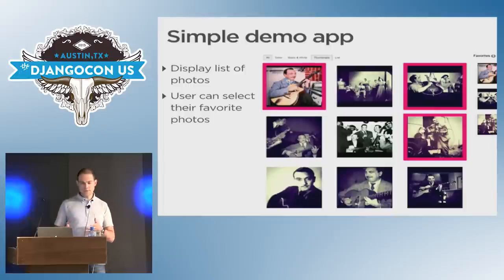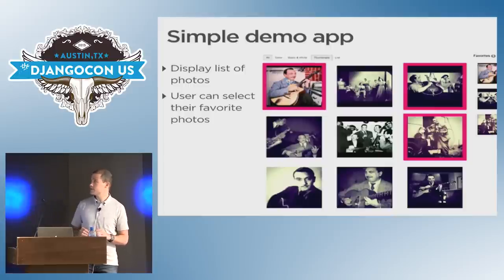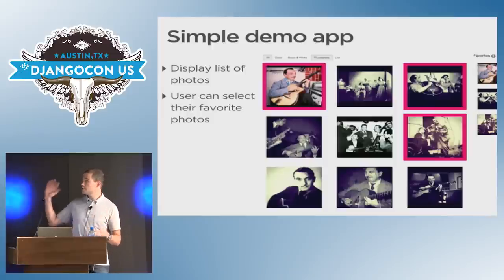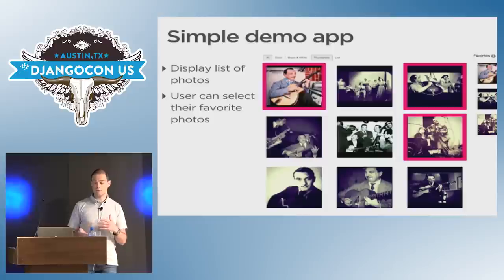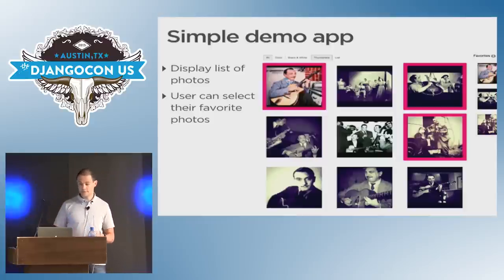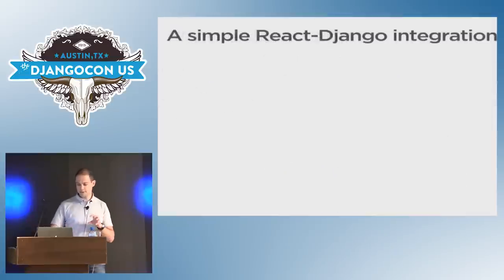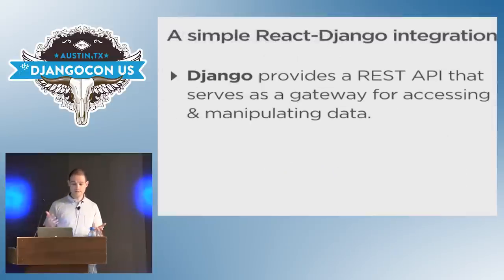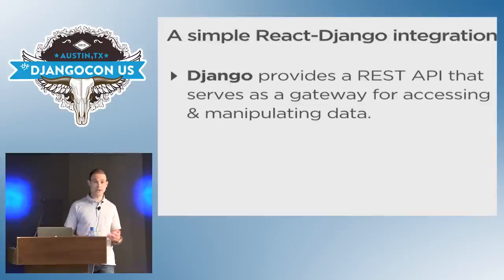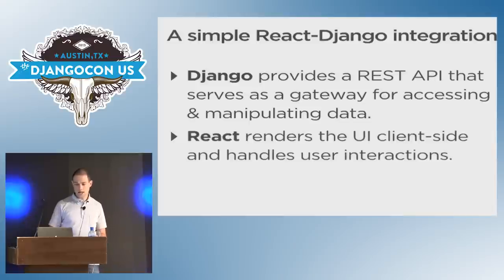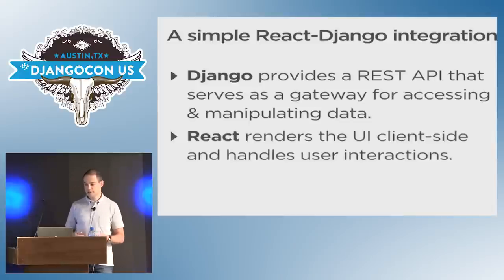To illustrate some of those concepts, I'm going to walk you through a small demo app that I've built. It's very simple — just a list of photos. You may filter those photos based on whether it's black and white or color, and you can also select some of those photos to mark them as your favorites. So we have Django, which will be responsible for providing a REST API to access and manipulate data server-side, and React that will handle rendering the UI client-side and all user interactions.